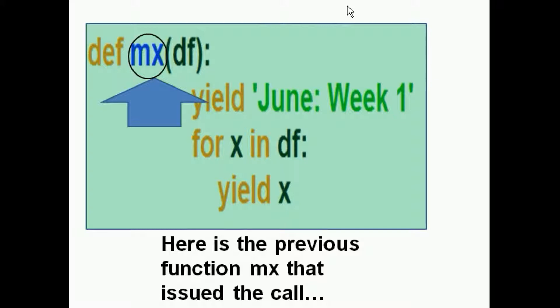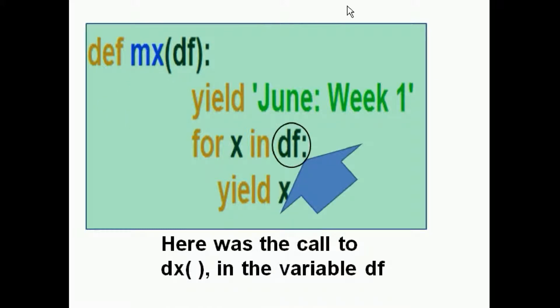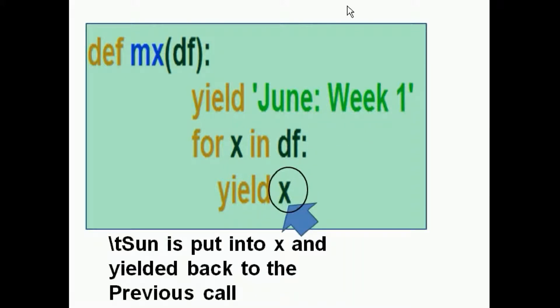Well, there's our MX function, which called DF right there. Here was the call to DX in the variable DF, of course. And he goes down one line, slash T sun is put into X and yielded back to the previous call. So X, slash T sun is put into here now.